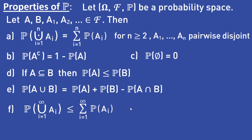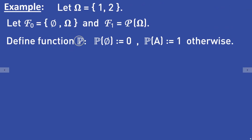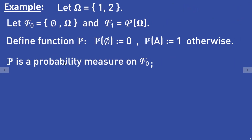Let's take a look at some easy examples. Let omega be the set that consists of the numbers 1 and 2. Let F0 be the trivial sigma algebra, so F0 consists of the empty set and omega. Let F1 be the discrete sigma algebra, so F1 is equal to the power set of omega. We define a function P such that P of the empty set equals 0 and P of any other set A equals 1. This function P is a probability measure on F0, the trivial sigma algebra.